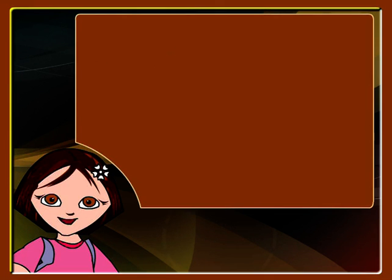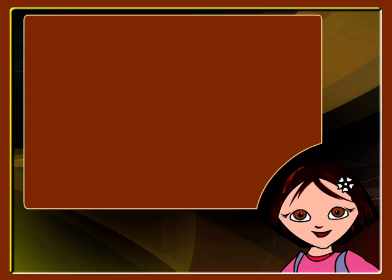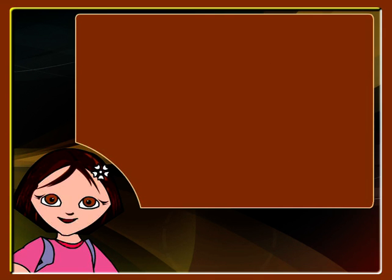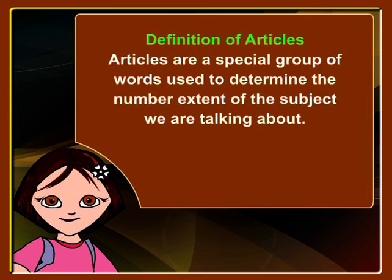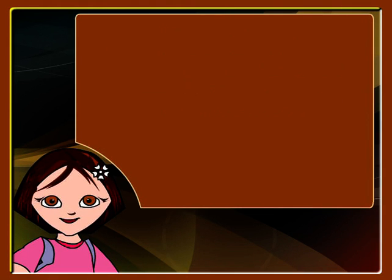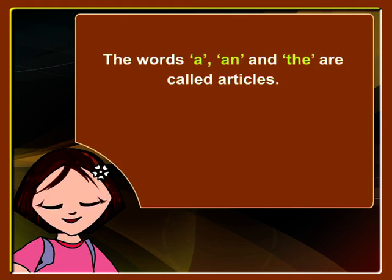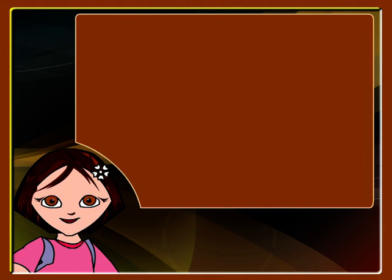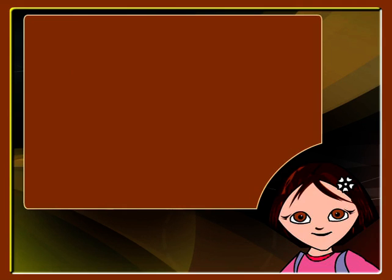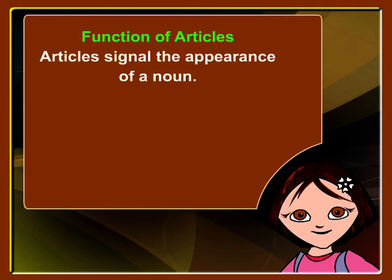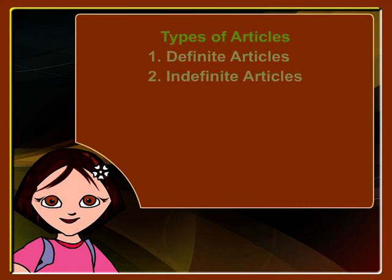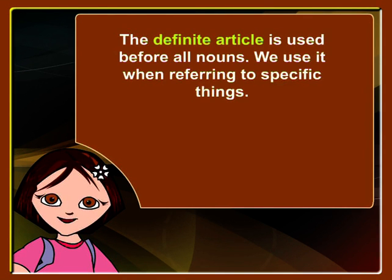Similarly, you have some more sentences without articles: 'I study English.' 'She loves chocolates.' 'Harry Potter is very smart.' Thus we conclude that articles are a special group of words used to determine the number and extent of the subject we are talking about. These consist of the words A, AN, and THE. Have you noticed that as a rule, articles appear before nouns? There are two types of articles: definite and indefinite articles.